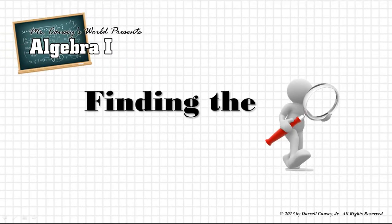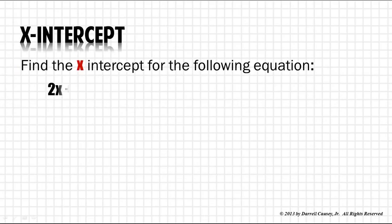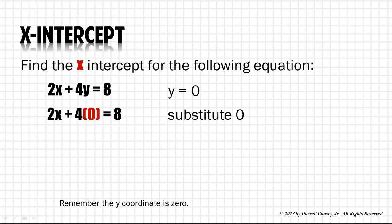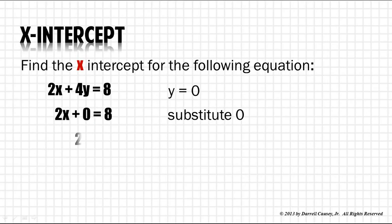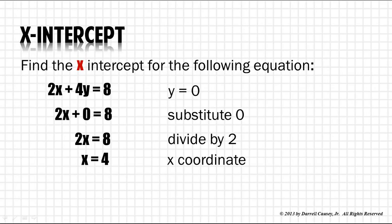Finding the x and y-intercepts. Find the x-intercept for the following equation. Now the best way to find the x-intercept is to let y equal zero. And therefore, 2x plus 4 times zero equals 8. We just substitute the zero in. We'll do some simplification and we get 2x equals 8. Divide both sides by 2 and we get x equals 4. Therefore, the x-intercept is 4, 0.